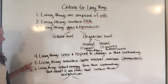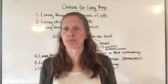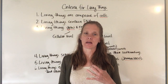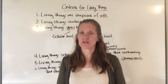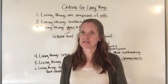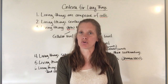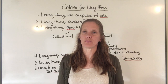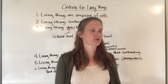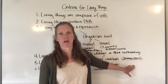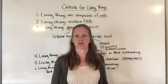Living things must also maintain stable internal conditions—a process called homeostasis. For example, we are endotherms: we regulate our own body temperature internally. An ectotherm, like a snake or reptile, cannot regulate its own temperature, so it lies in the sun to warm up and hides under a rock to avoid overheating. Creatures also regulate pH levels and many other internal conditions.